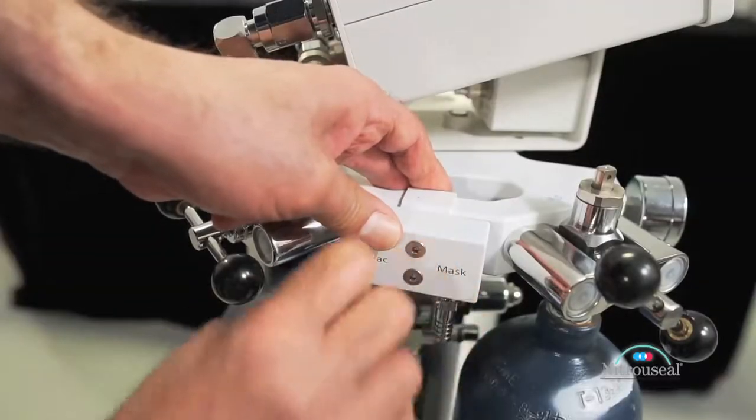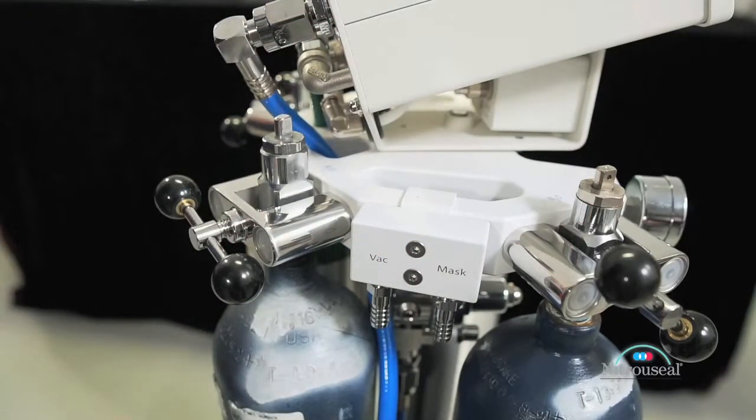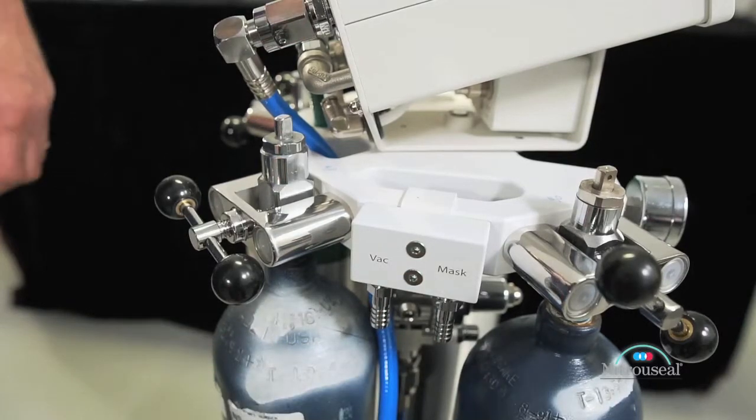When correctly installed, the vacuum block will provide a pair of spaced nipples pointing in a downward direction, one marked VAC and the other marked MASK.